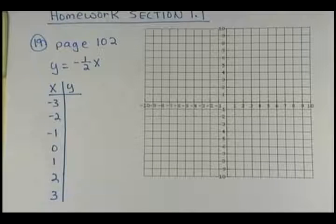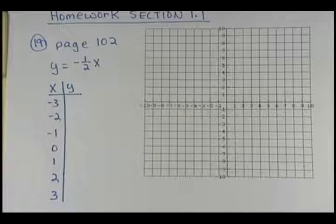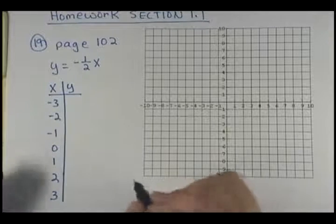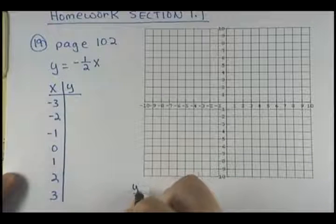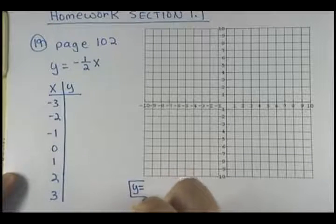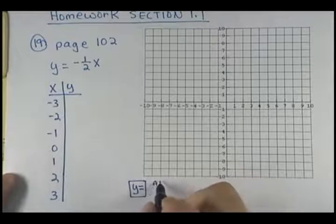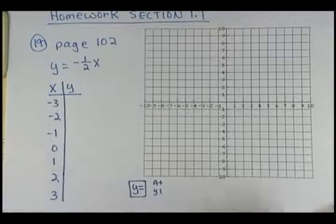Let's start off with one like number 19 on page 102 there. We've got y equals negative one-half x and we want to get our table and we want to graph this.